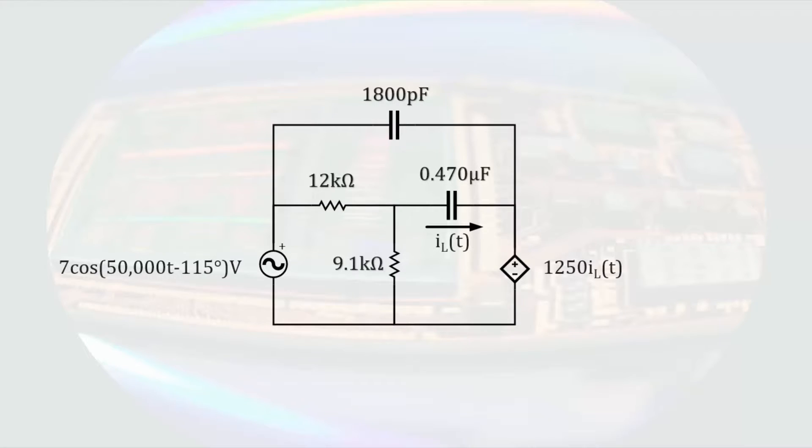I think we should do one more example of phasors and mesh current analysis. This time with a dependent source. To add another wrinkle, the voltage source for this problem will have a phase angle of minus 115 degrees. The independent source for this circuit is still a sinusoid, and there's only one frequency. And the circuit contains capacitors, so we can use phasor analysis. To determine the time varying current IL of T, the first step, of course, is to convert the circuit into the phasor domain.